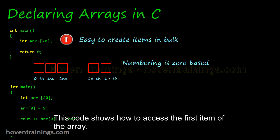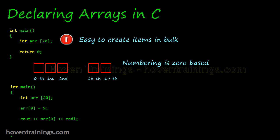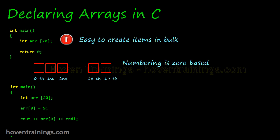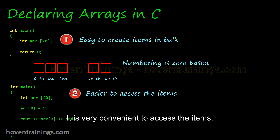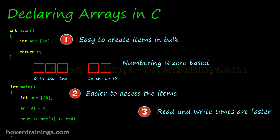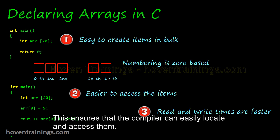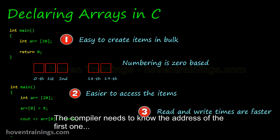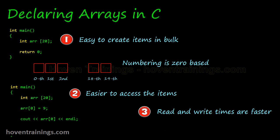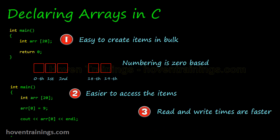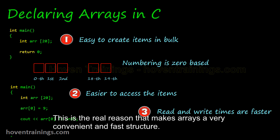This code shows how to access the first item of the array. Notice the use of an index number in the brackets — it is very convenient to access the items. Array items must lie side by side, which ensures that the compiler can easily locate and access them. The compiler needs to know the address of the first element, and it can locate any other by adding the index number to the starting address. This is the real reason that makes arrays a very convenient and fast structure.